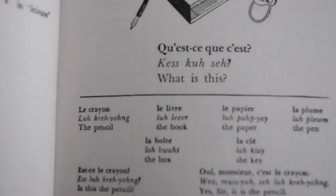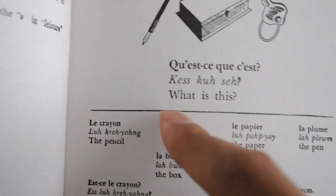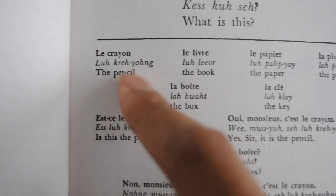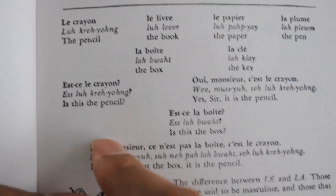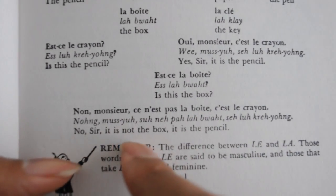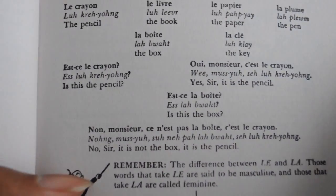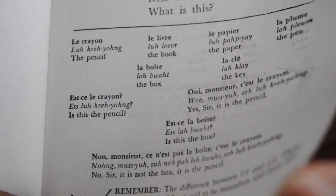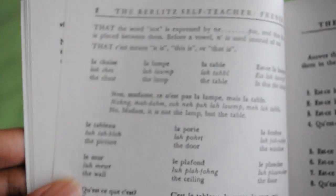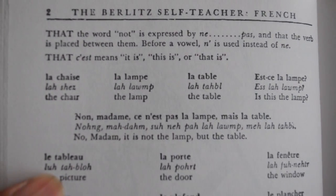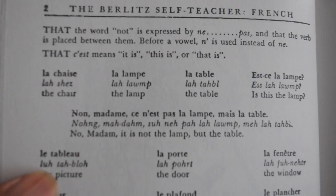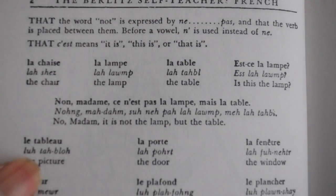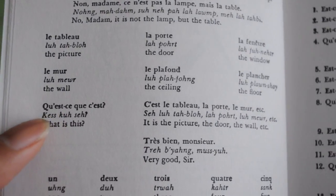So here you can see all this vocabulary: the pencil, the book. 'Is this the pencil? Is this the box? No sir, it is not the box, it is the pencil.' They basically just put all the vocabulary in context like this throughout the whole book. On the next page you see more vocabulary — 'Is this the lamp? Is this the table?' They give you the vocabulary word and then put it in a question.